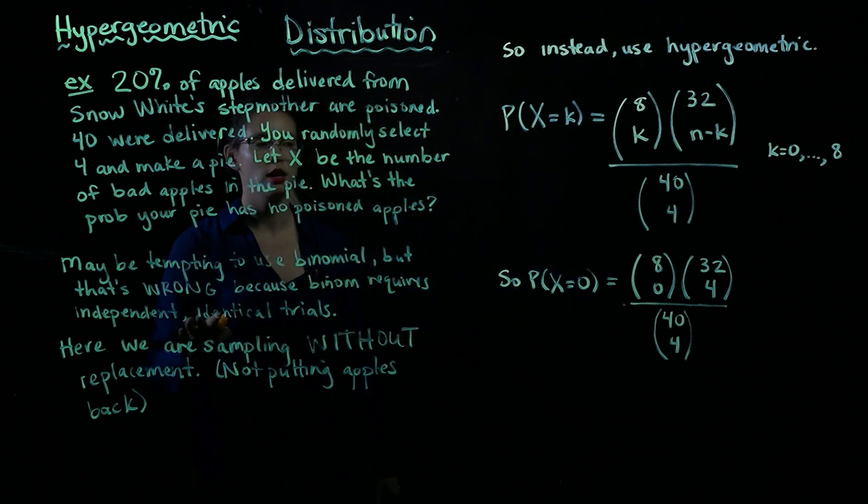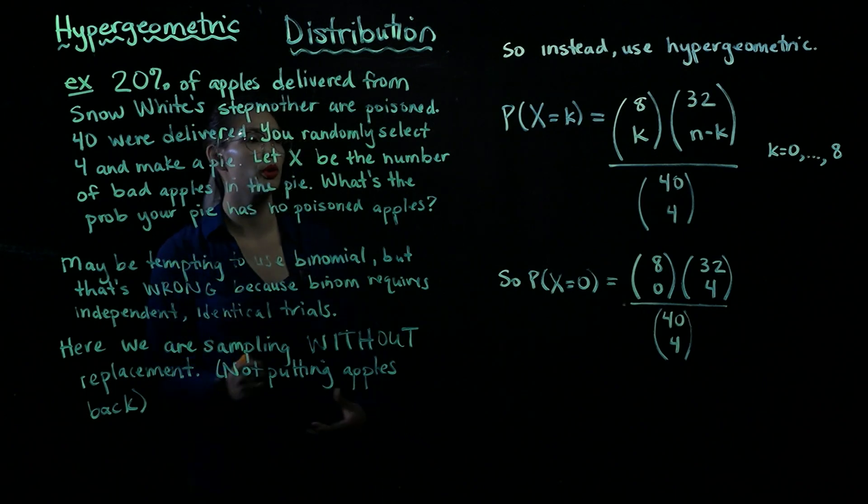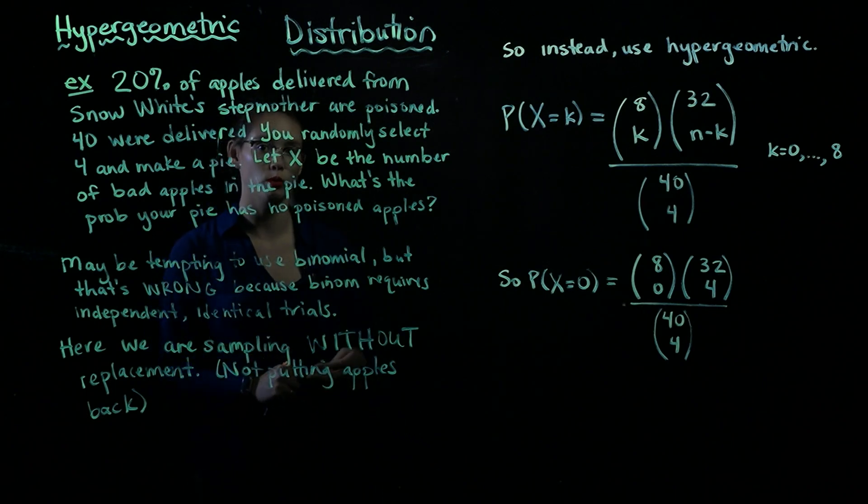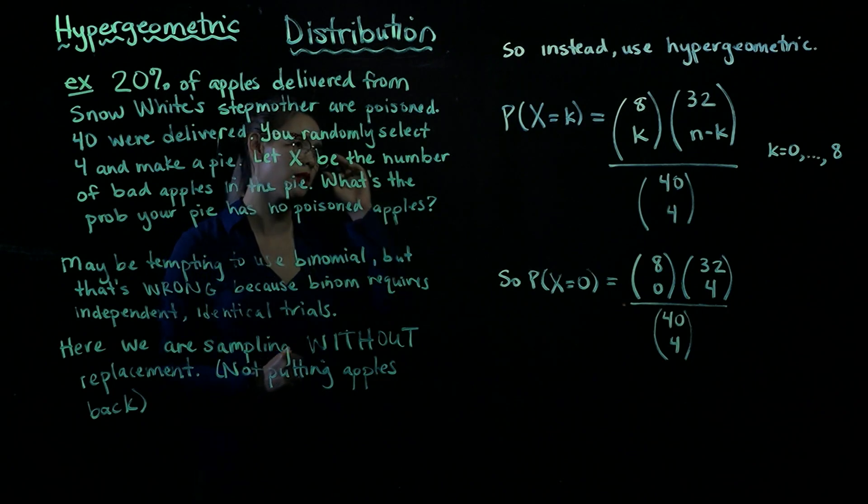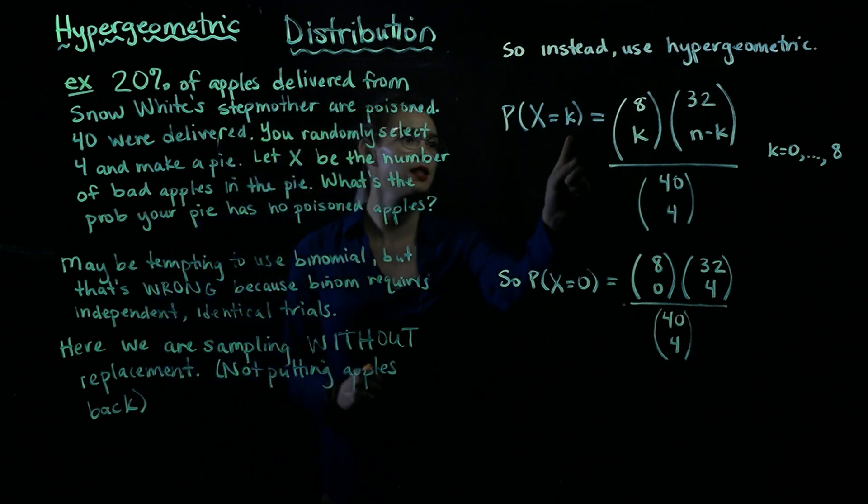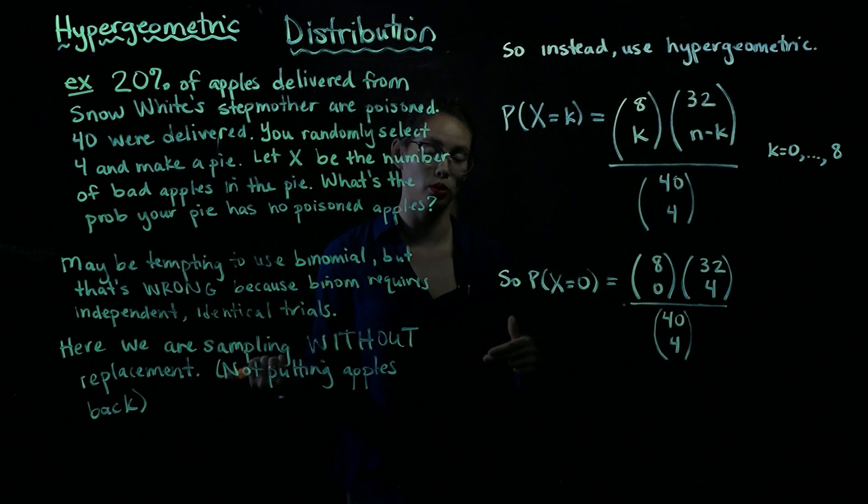Okay, so if we want to know generally what's the probability that we have k poisoned apples in our pie, which remember the pie has four of these apples, the probability X is equal to k. Well, we can just go back to our combinatorial probability from a few videos ago.